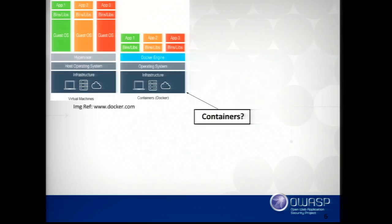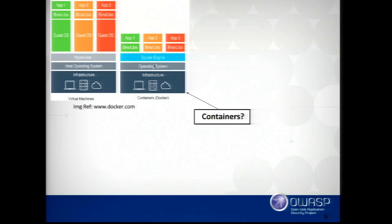This is the difference between virtual machines and containers. Virtual machines have individual OS for each of them, but containers don't have individual OS — they're application-centric. Containers share the kernel. They build on top of a common kernel, and that's the main difference between containers and virtual machines.